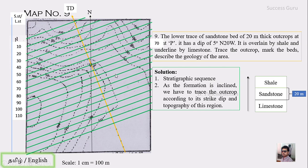Now we find where equal-value strikes and contours intersect. At 110 the contour matches the 110 strike; similarly for 100, 90, 80, 70 (already at P), and 60. We trace a smooth line through these points — this is the lower trace of sandstone by limestone. On one side of this line is sandstone; on the other side is limestone. That completes the lower trace.